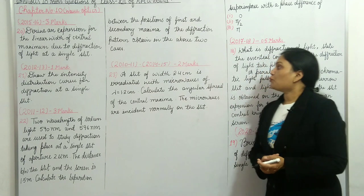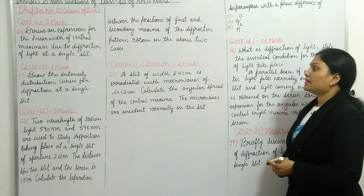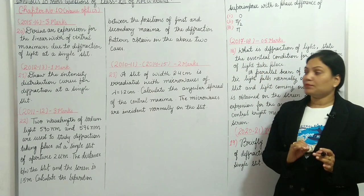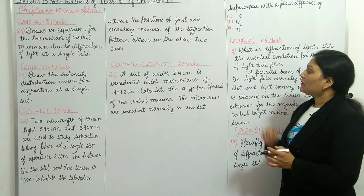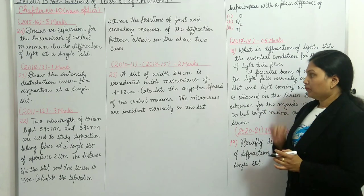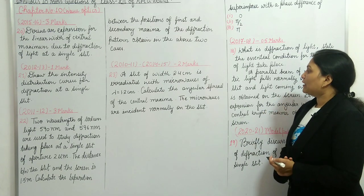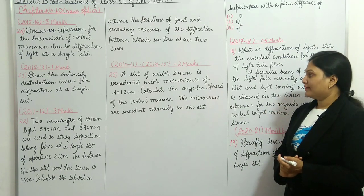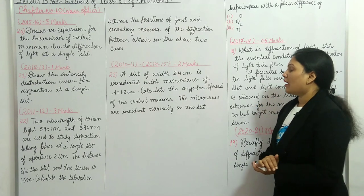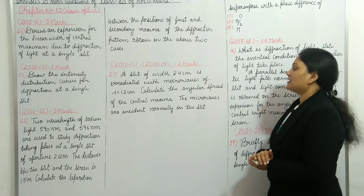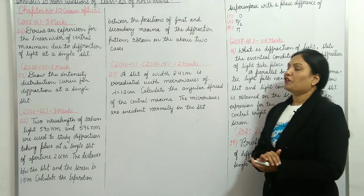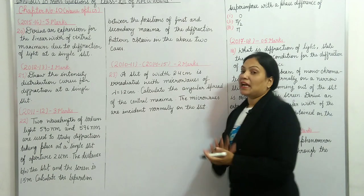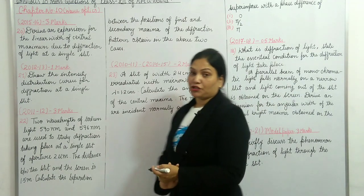Question twenty-three: a slit of width 2.4 cm is irradiated with microwaves of wavelength lambda equal to 1.2 cm. Calculate the angular spread of the central maximum when the microwaves are incident normally on the slit.